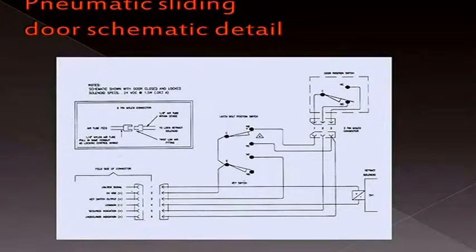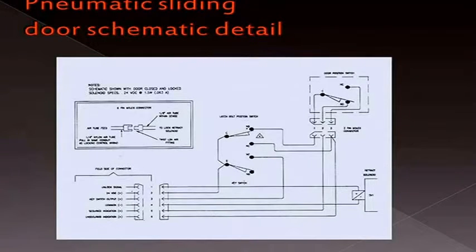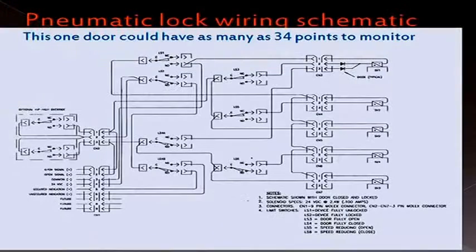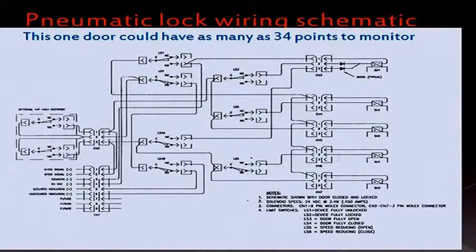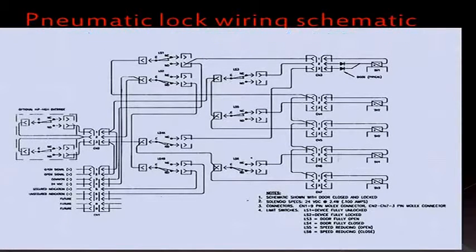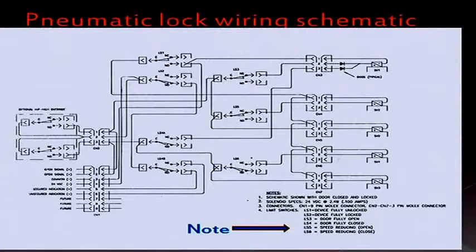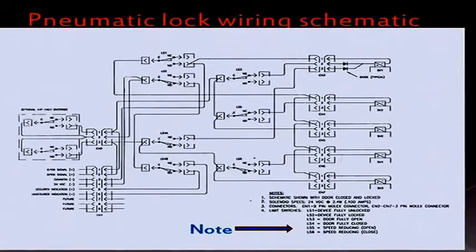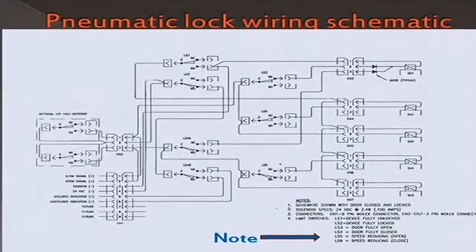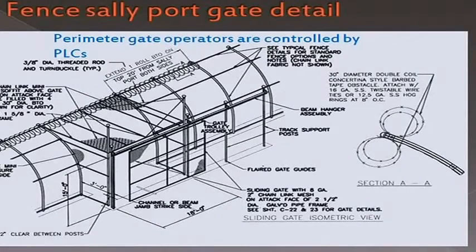A lot of times PLCs are implemented to cut down on hardware costs — conduit and actual wiring. You can run all these wires back to central control from every single point, or you can run them to a PLC and run one wire back to central control. The motors on the doors can be controlled to adjust speed — you could crank it up and essentially blow out the motors on the doors, making them no longer functional. It's called a cascade program so the doors don't all open or slam at once. The perimeter fences also have intrusion detection systems.